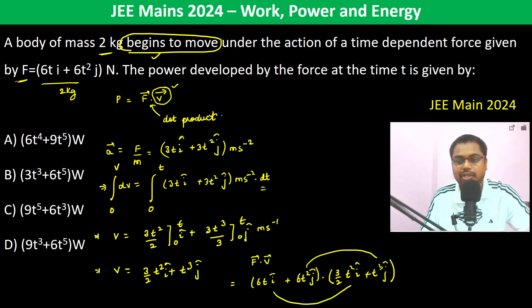And I dot I is 1 and J dot J is 1. So therefore this is 9T cube plus we have 6T to the power 5, and this will be in watts.